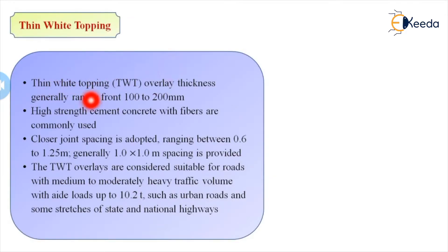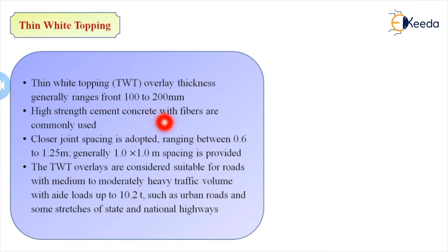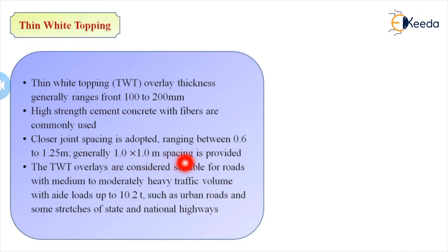For thin white topping (TWT), the overlay thickness generally ranges from 100 to 200 mm. It may be increased or decreased depending upon the traffic on the road — if there is heavy wheel traffic the thickness can be increased. High strength concrete, or cement concrete with fibers, can also be used. Closer joint spacing is adopted, ranging from 0.6 to 1.25 meters, with generally 1 by 1 meter spacing provided.